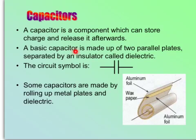A basic capacitor is made up of two parallel plates separated by an insulator in between called dielectric. The circuit symbol is like this. These two parallel lines represent two parallel plates.